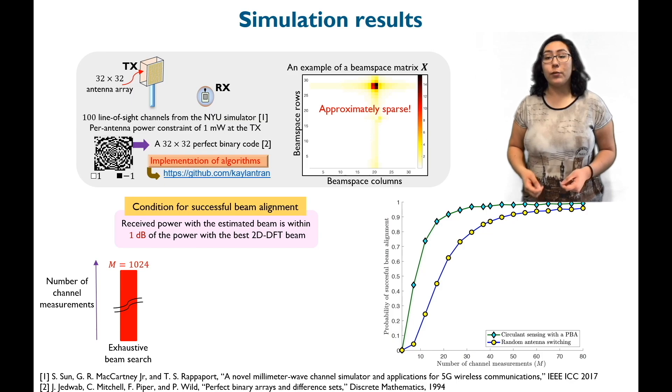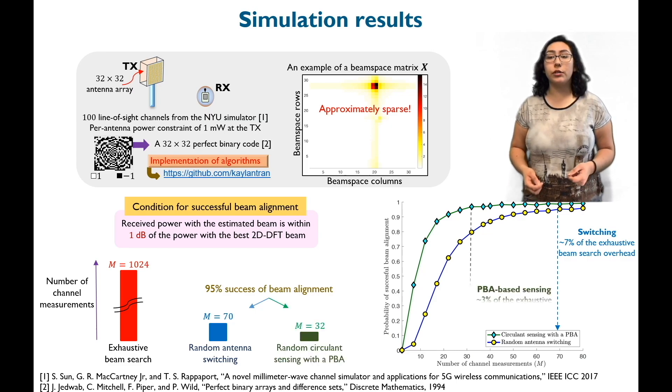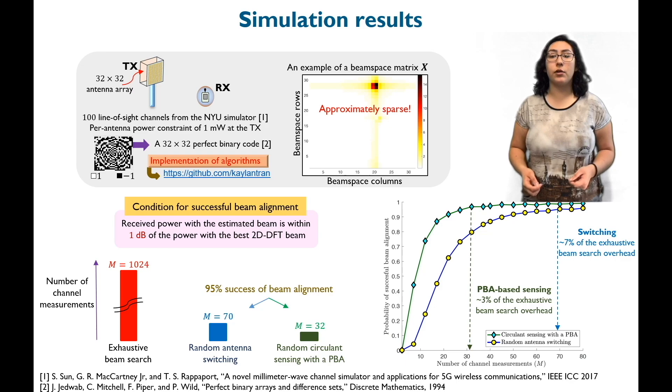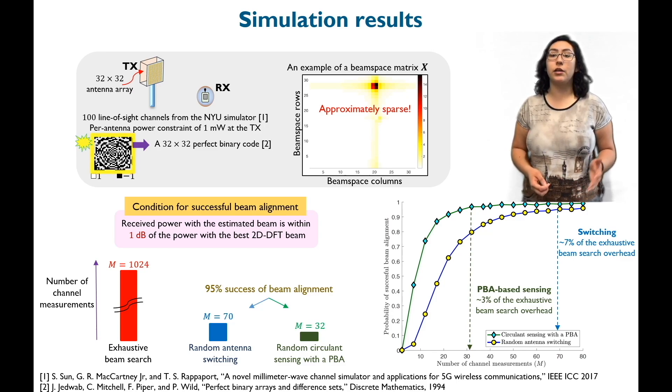As shown in this plot, the overhead with random antenna switching is about 7% of that with exhaustive search. Furthermore, circulant sensing with a perfect array requires just 3% of the overhead with beam search. The perfect array-based solution achieves better performance because it activates all the antennas for the channel measurement, unlike switching which turns on a single antenna.